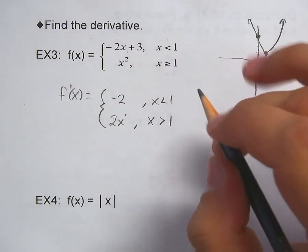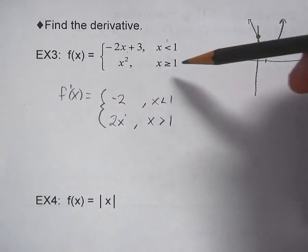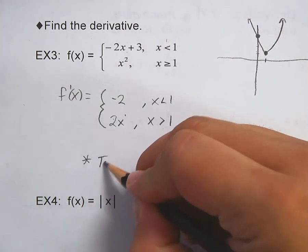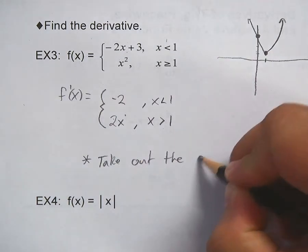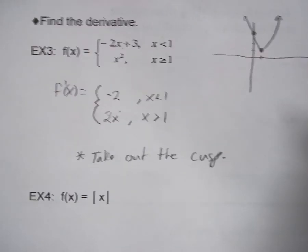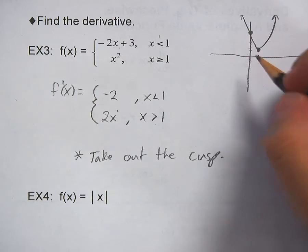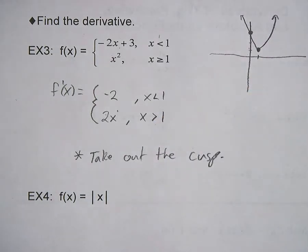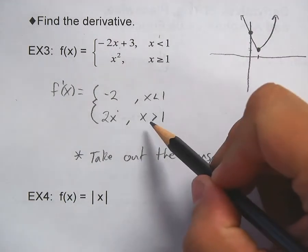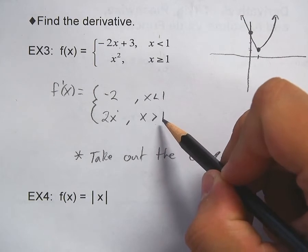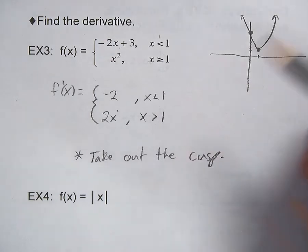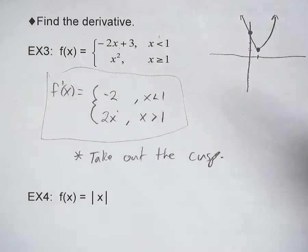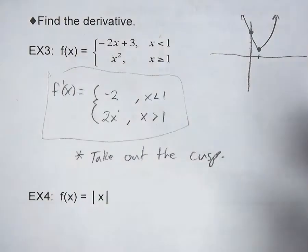Here's the difference between being able to do a derivative and not being able to do one. See this 'equal to one'? I'm taking that out. Make a note: take out the cusp. I'm going to take the point where it's not differentiable and get rid of it — to the left it's negative two, to the right it's two x. If you say x is greater than or equal to one, you've included the cusp and invalidated the problem. So take out the point that's not differentiable, and write it out.